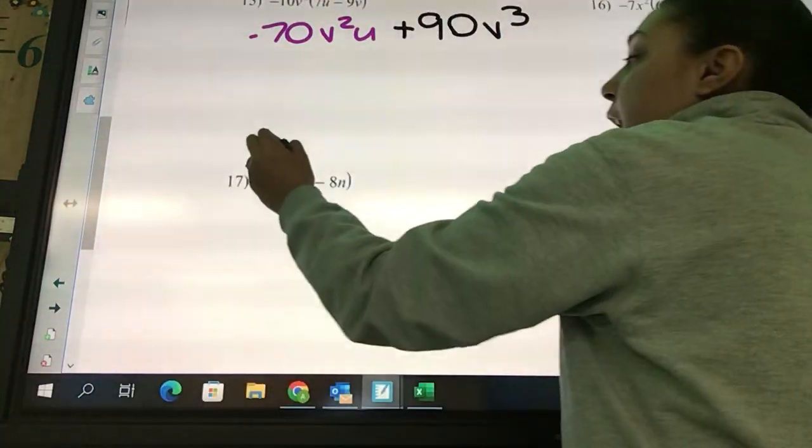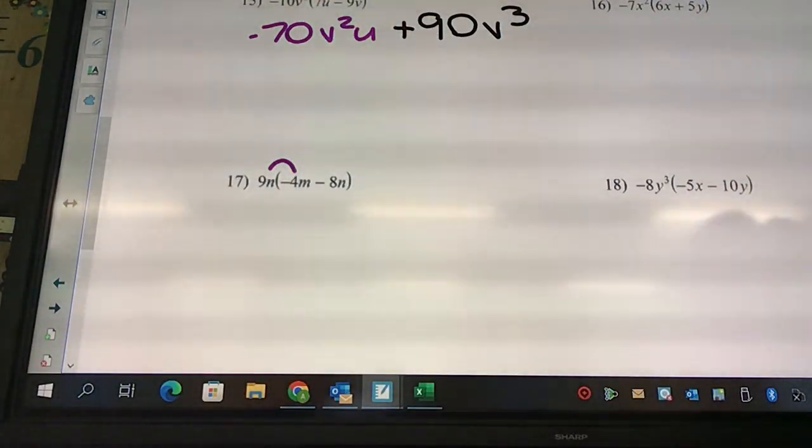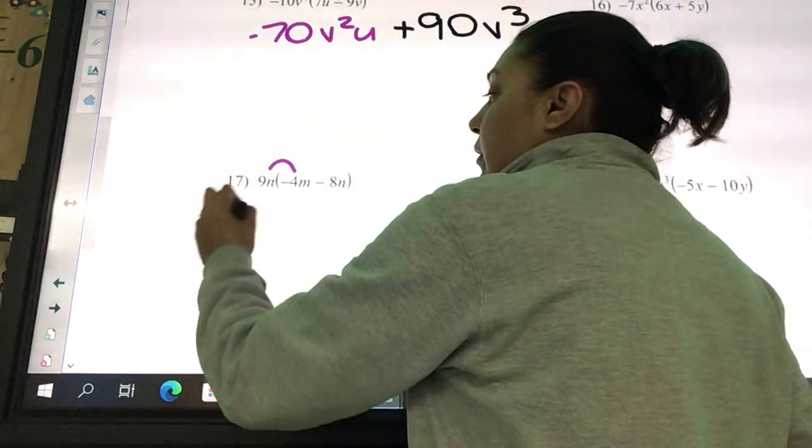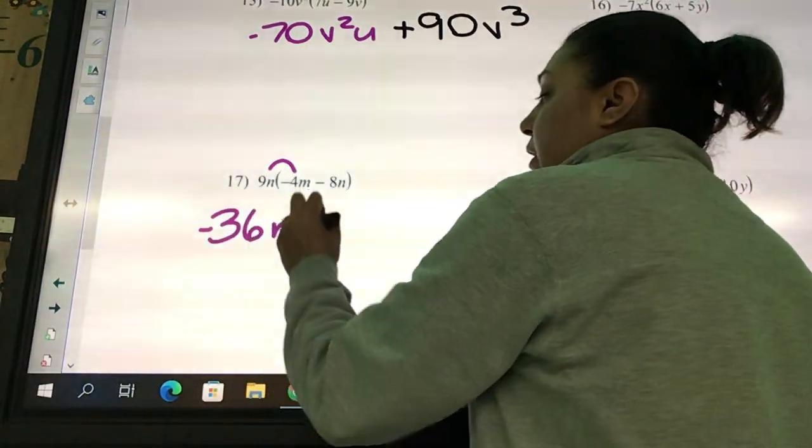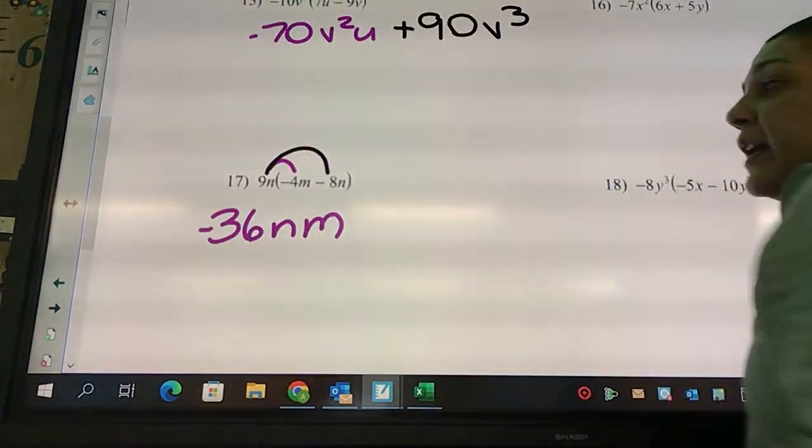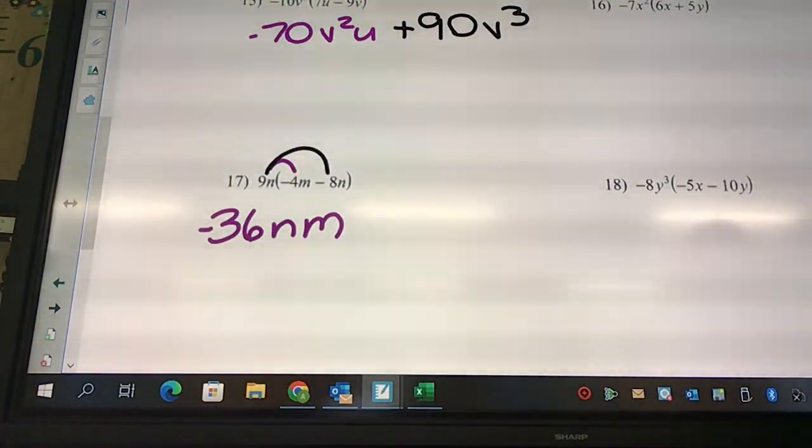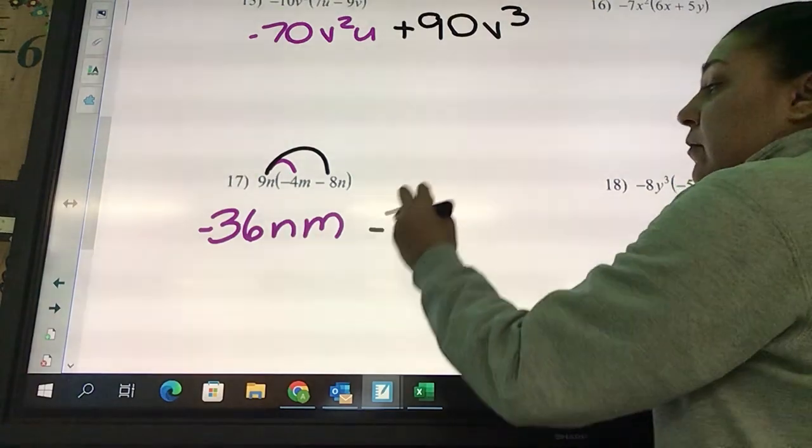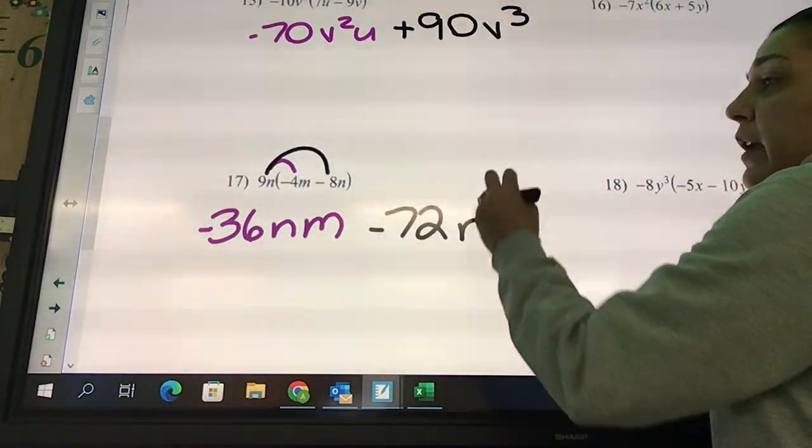9 times negative 4 is negative 36 and m. 9 times negative 8 is negative 72 and n².